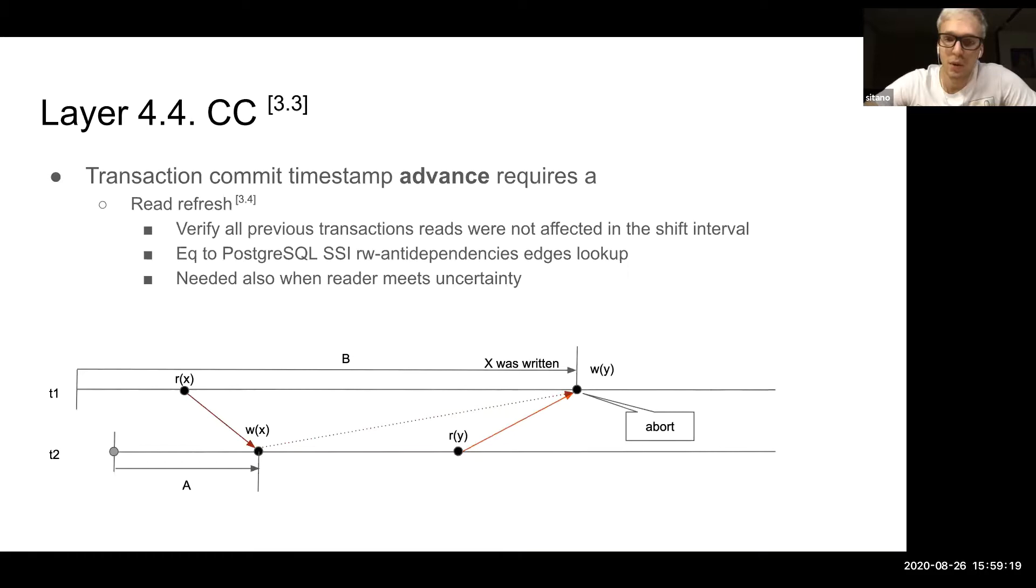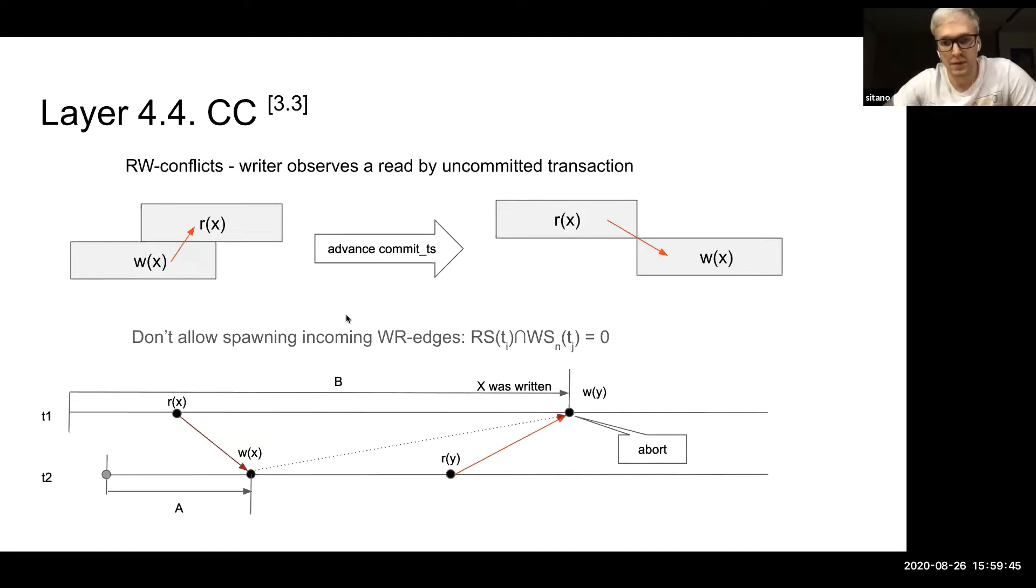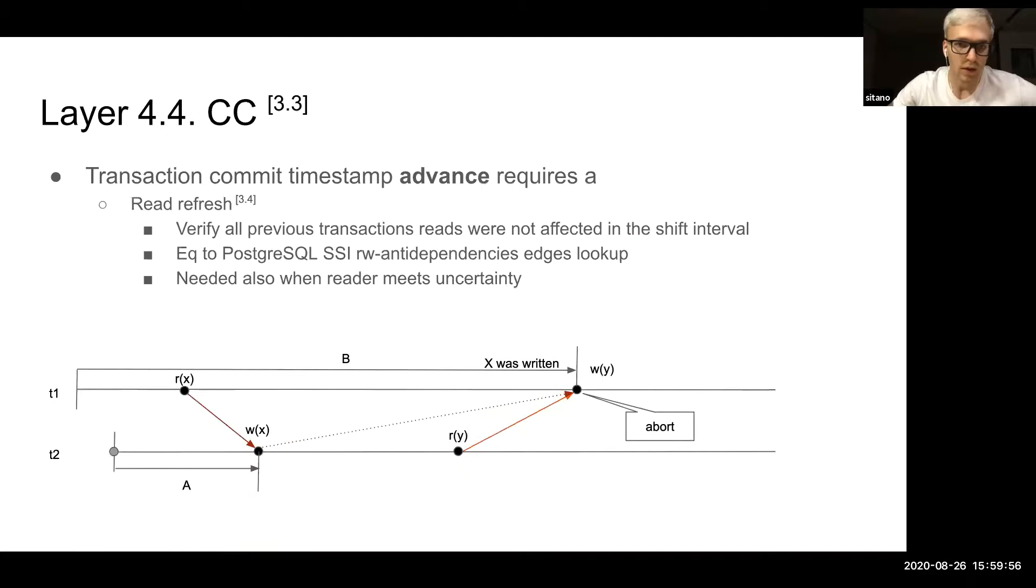It's called read-refresh. Basically what it is doing is ensuring that the read set of this transaction that we are advancing the timestamp of was not affected by anything in the window of the shift, which is very similar to what PostgreSQL is doing in their SSI algorithm. But basically what they are ensuring is that the shift doesn't spawn incoming WR edges, which is very similar to what BOCC does.